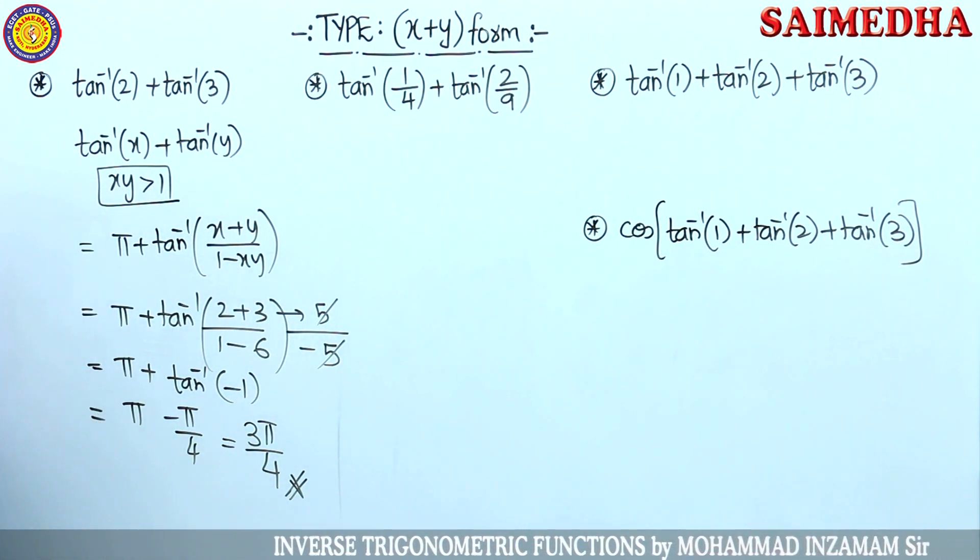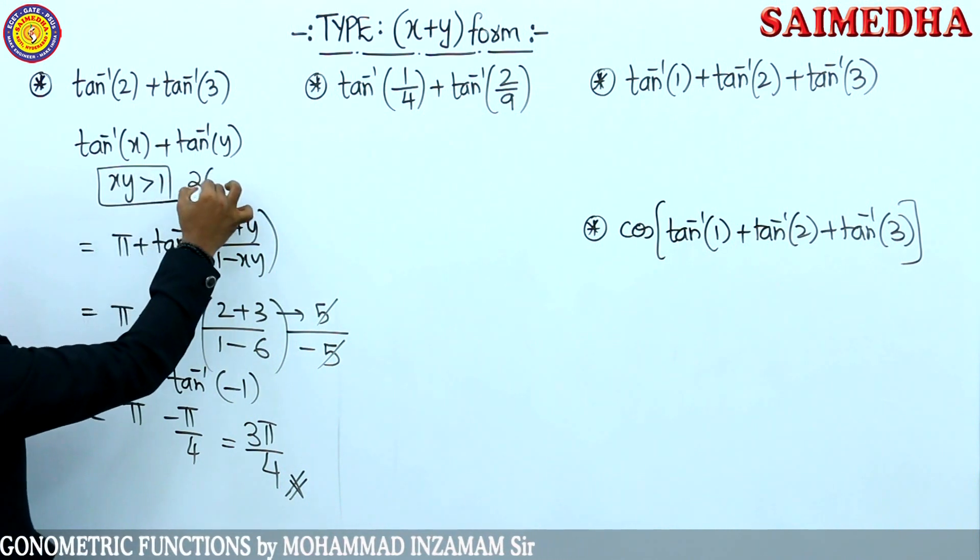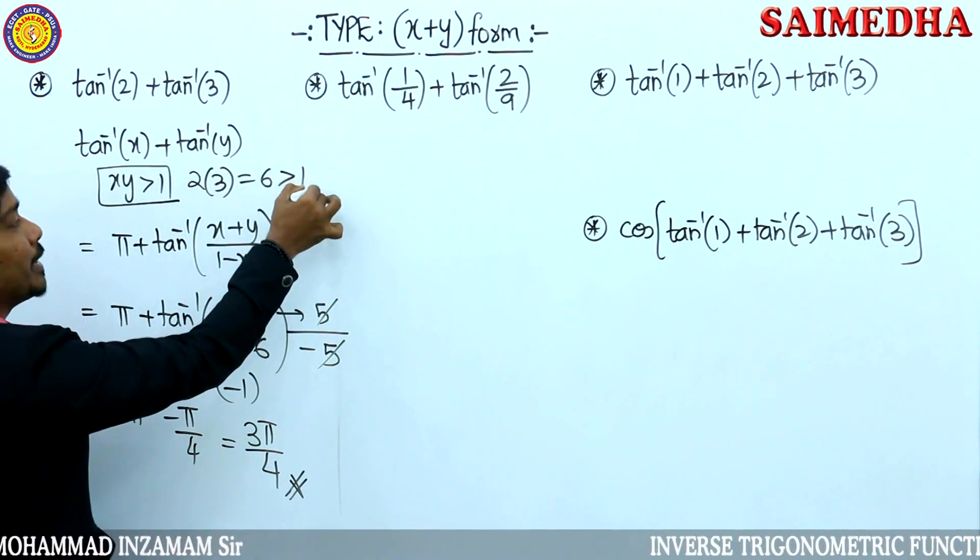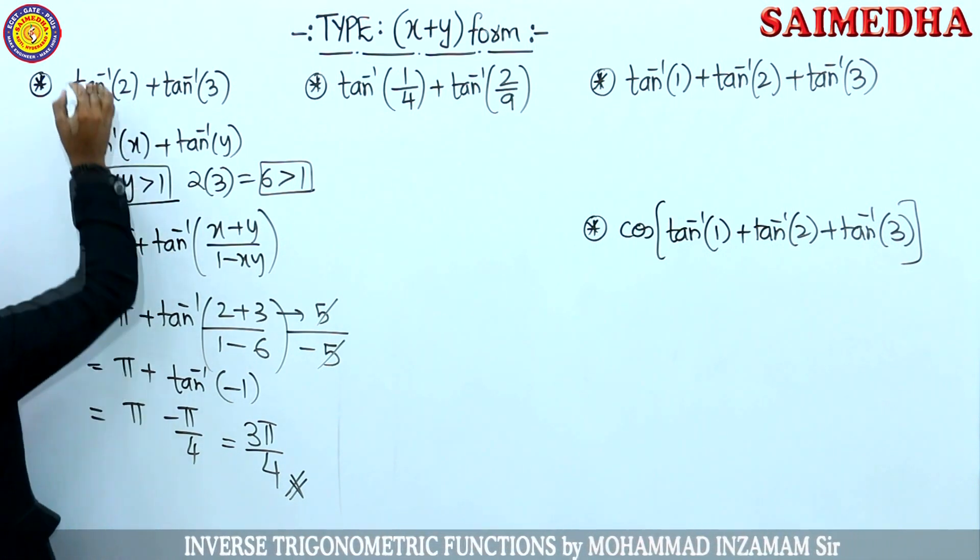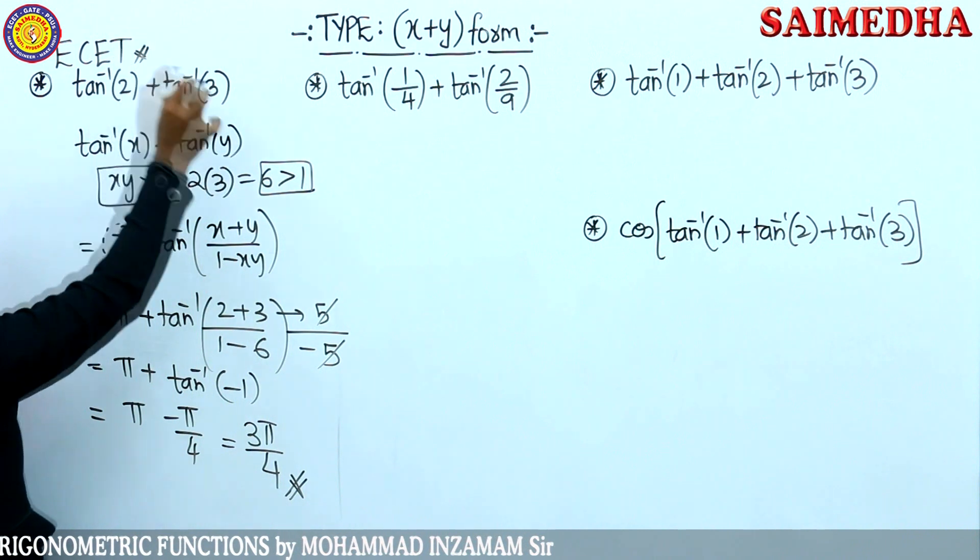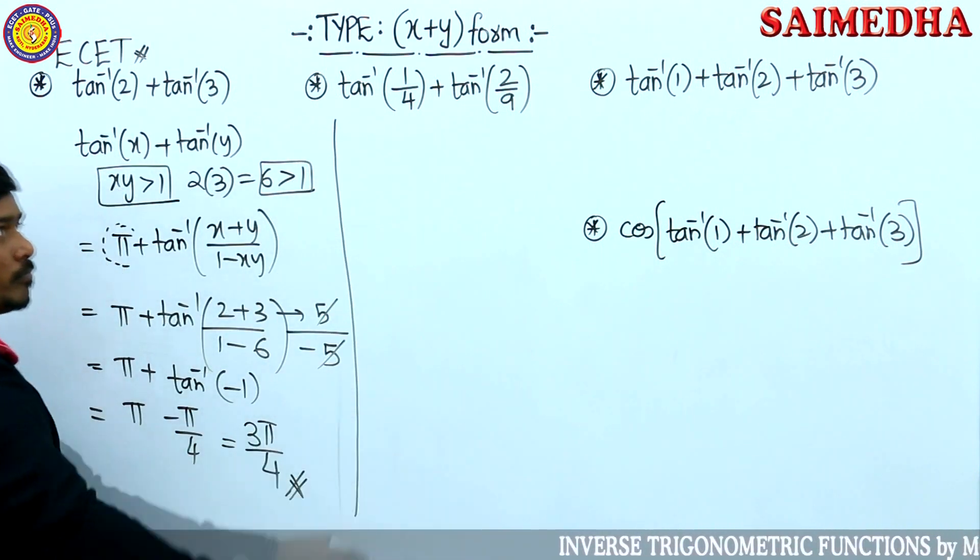Okay, observe guys. Tan inverse of x plus tan inverse of y, xy value greater than 1, that is 2 into 3, 2 into 3 is 6, 6 is greater than 1. Greater than 1, then you add pi. This is a previously SET appeared question, I have to focus over it.